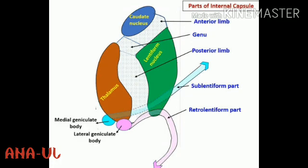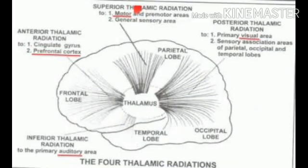Ascending fibers in the internal capsule are predominantly thalamocortical fibers from the thalamus to all parts of the cerebral cortex, forming thalamic radiations or peduncles. The anterior thalamic radiations, or frontal thalamic peduncle, pass through the anterior limb and carry fibers to the frontal lobe from the anterior and medial thalamic nuclei, as well as fibers from the hypothalamus and limbic structures.